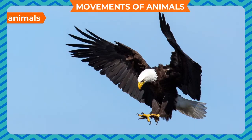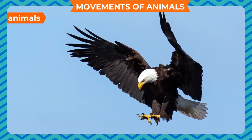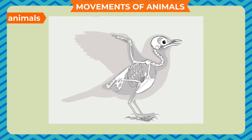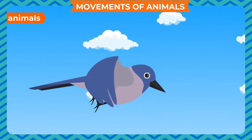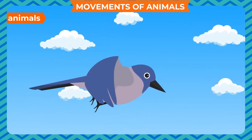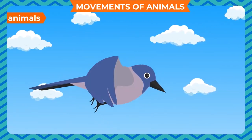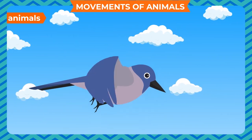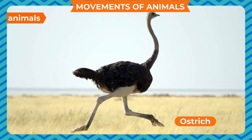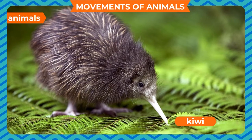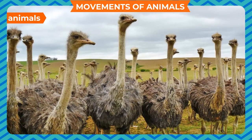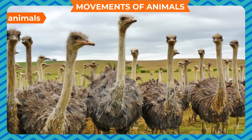Movement of birds: most birds fly in the air with the help of their wings. They push themselves forward by moving their wings up and down. Their bones are small and light, which help them to fly. They use their hind limbs to run, hop, perch, or scratch the ground to look for prey. Some birds such as ostrich and kiwi cannot fly because they have a heavy body and weak wings.